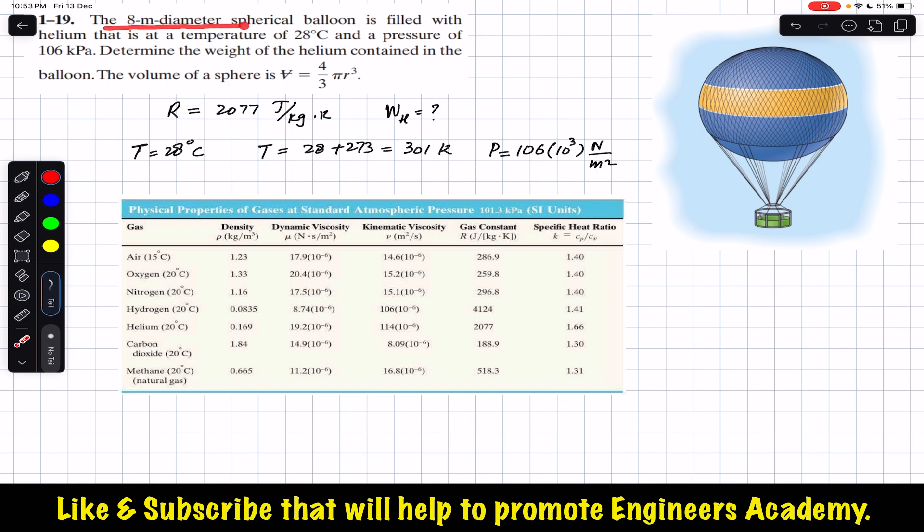spherical balloon is filled with helium that is at a temperature of 28°C and a pressure of 106 kPa. Determine the weight of the helium contained in the balloon. The volume of a sphere can be found by using this formula.